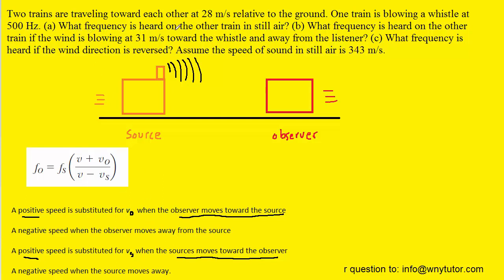Part A of the question is asking what frequency is heard on the other train. The other train is going to be the observer train. And so what we're trying to calculate is F0. We simply have to plug in all the known values. Fs again is the frequency of the source which is 500 hertz.